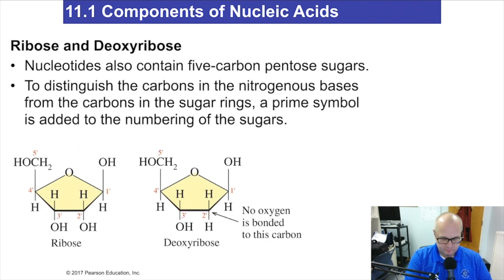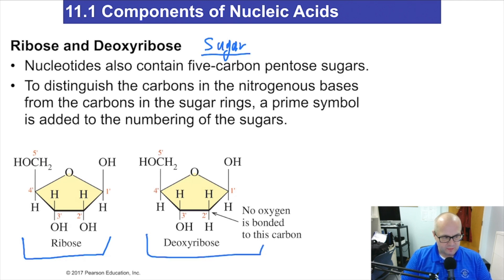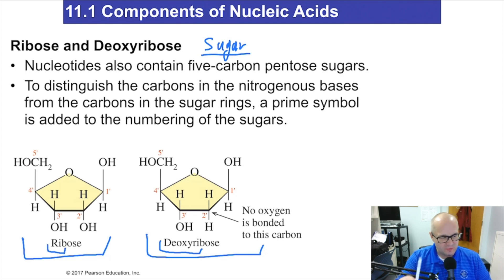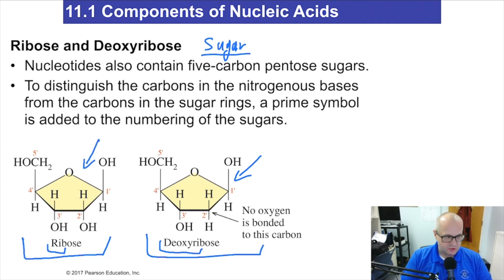Next is the sugar. There are two sugars you have to know when dealing with DNA and genetics: ribose and deoxyribose. You all know that DNA stands for deoxyribonucleic acid and RNA stands for ribonucleic acid. I hope that just triggered something — that's where those words come from. Deoxyribose is the sugar DNA is built with; ribose is the sugar RNA is built with. That's one of the major differences.